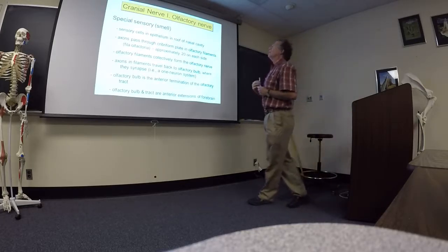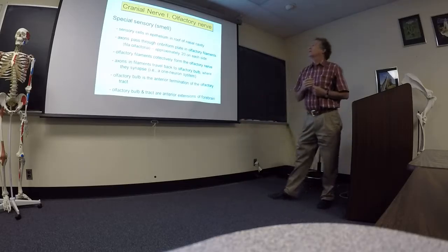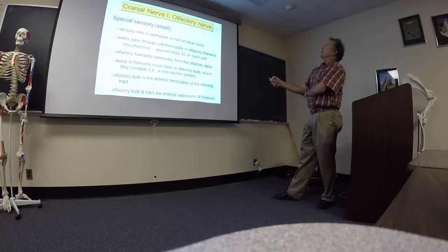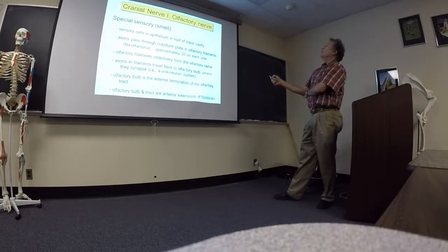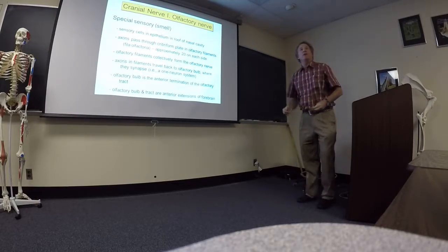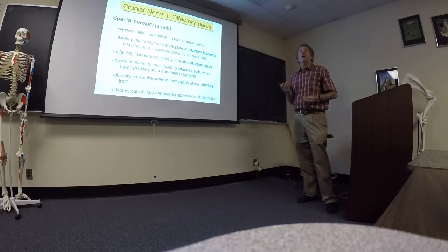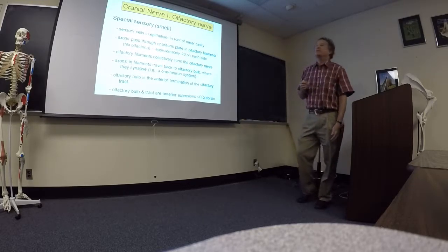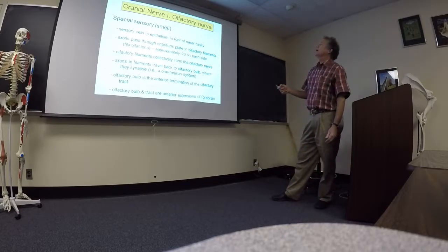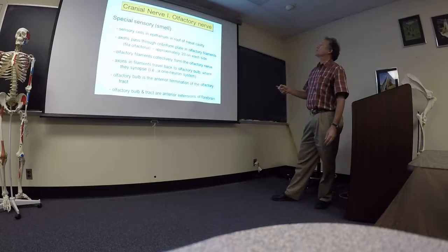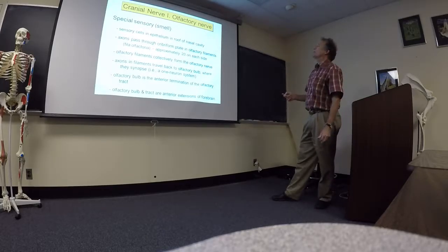Okay. Cranial nerve number one, the olfactory nerve. Concerned with smell. So the sensory cells are actually an epithelium in the roof of the nasal cavity. Although you have a fairly large area in the nasal cavity, particularly if you count all those sinuses that are extensions off of the nasal cavity. Nevertheless, the sensory cells are concentrated mainly in the roof.